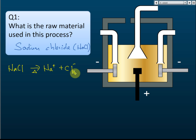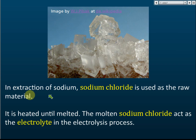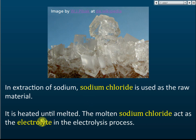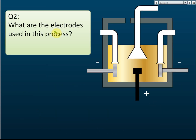This is an application of electrolysis in industry. In industry we use sodium chloride as the raw material in the extraction of sodium. Sodium chloride is heated until it melts, and the molten sodium chloride acts as the electrolyte of the electrolysis process. This is the first question usually asked in exams — what are the electrolytes or raw materials used in the extraction of sodium.